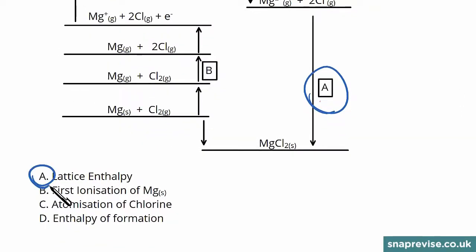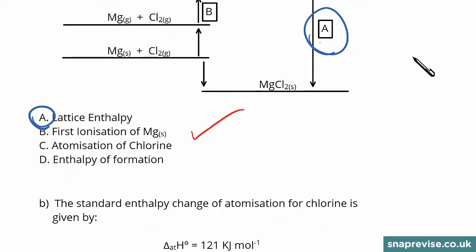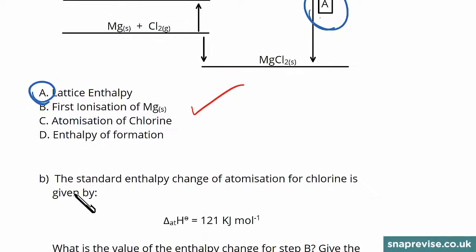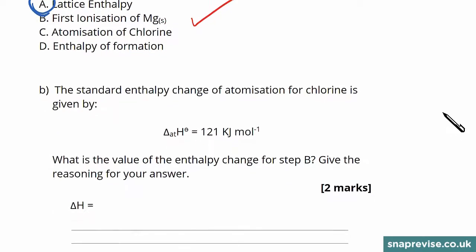So the correct answer here will be A, and that gives us our one mark. Now we're told that the standard enthalpy change of atomisation for chlorine is given by ΔatH = 121 kJ per mole.